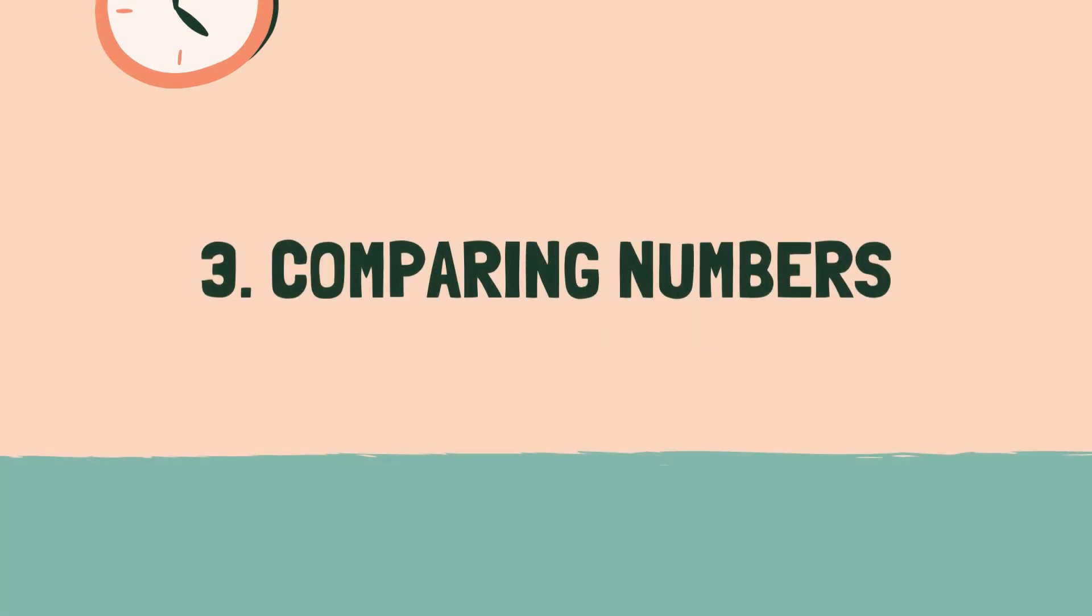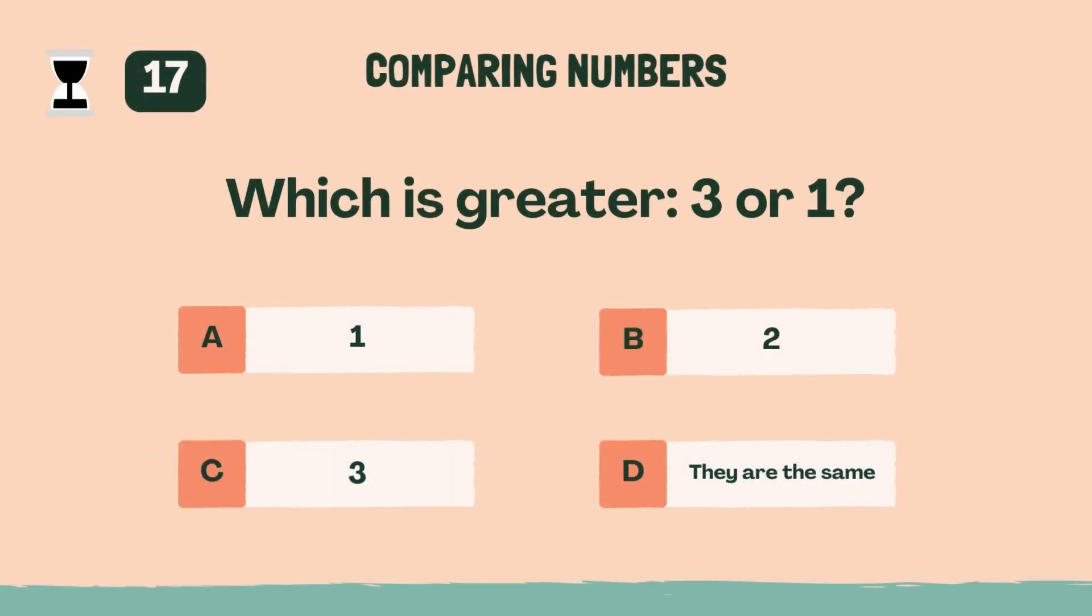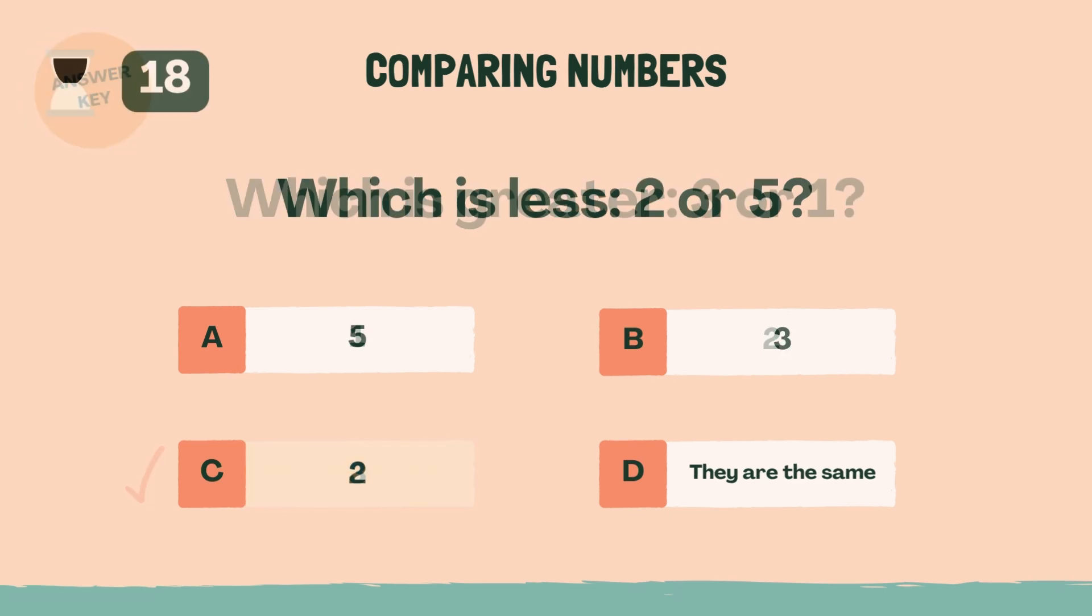Category 3. Comparing numbers. 3, 2, 1, go. Which is greater, 3 or 1? C, 3. Which is less, 2 or 5? C, 2.